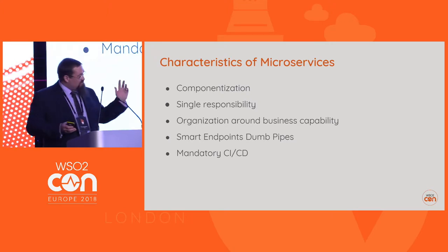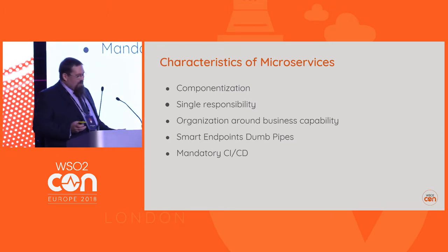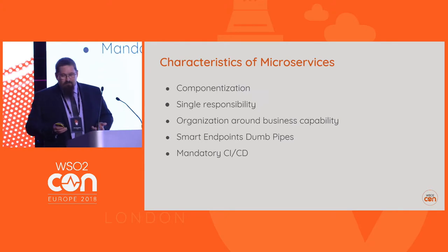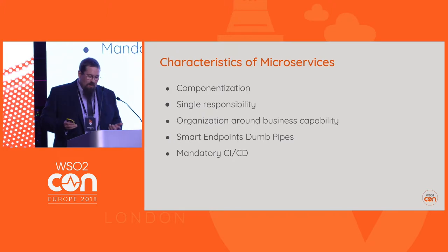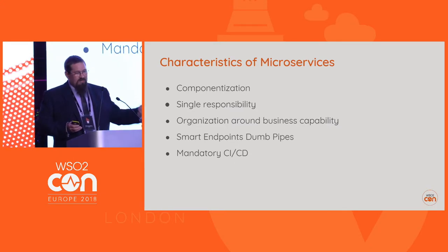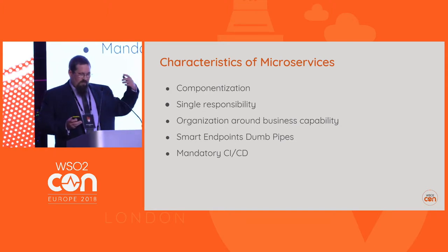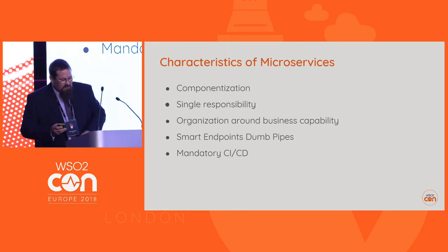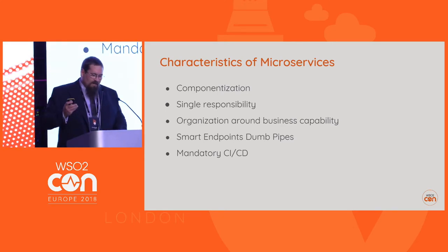It says mandatory CI/CD. You don't have to do it if you're a small outfit and you've got a few dozen microservices — you could probably manage without a robust CI/CD pipeline. However, as it gets bigger and you're going from tens to hundreds of microservices, a robust CI/CD pipeline using automation is essential.